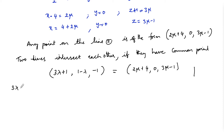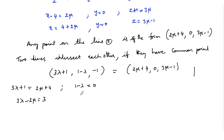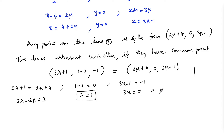Equating coordinates: 3λ+1 = 2μ+4, which gives 3λ - 2μ = 3. From the y-components: 1-λ = 0, so λ = 1. From the z-components: 3μ-1 = -1, so 3μ = 0, which gives μ = 0. Let us verify that λ=1 and μ=0 satisfy the first equation.